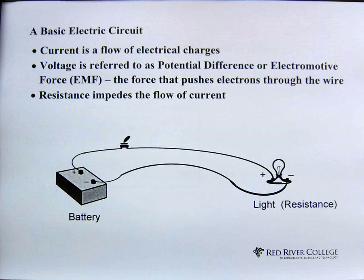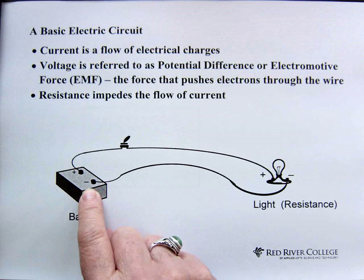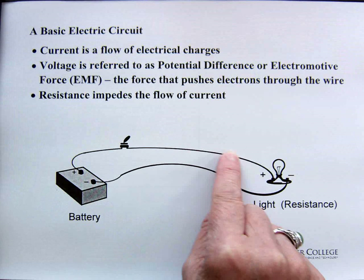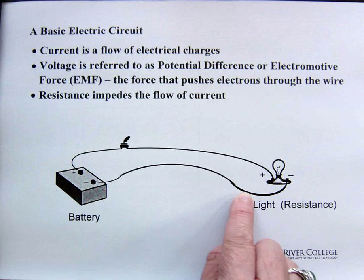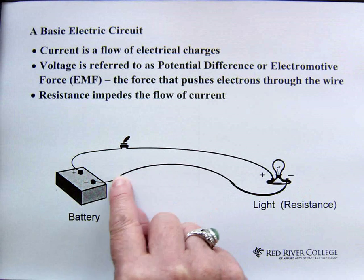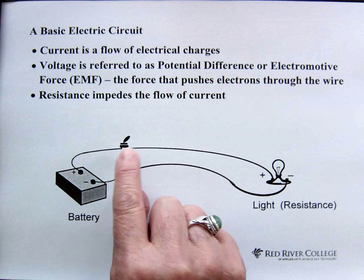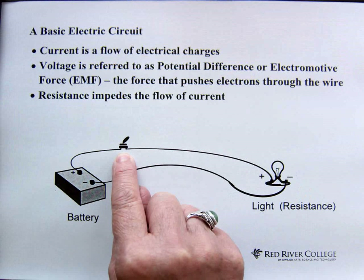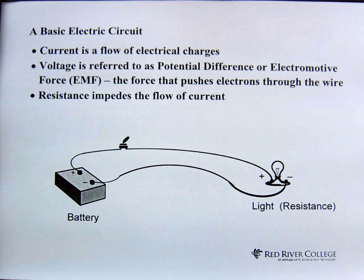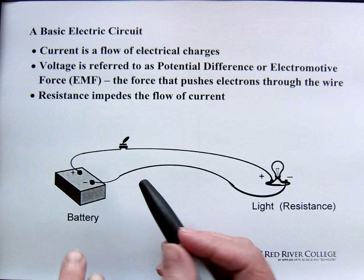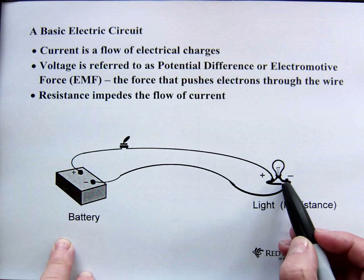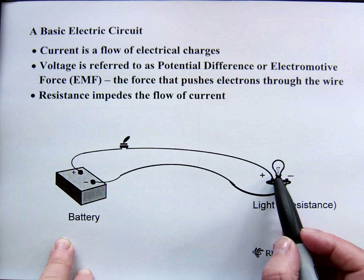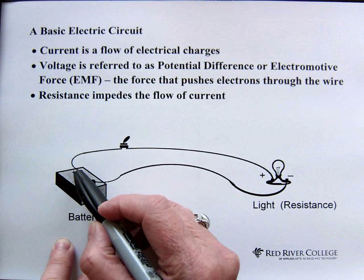Here we have a basic electrical circuit. We have a battery, we have a wire that connects us to a light, and then the wire that brings the other side of the light back to the battery. You can see here that we have a switch. If the switch is closed, we have a connection all the way from the battery through the light and all the way back to the other side of the battery.